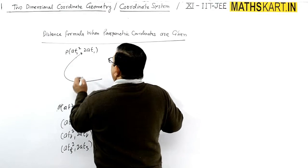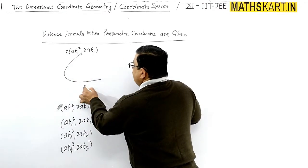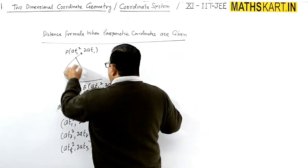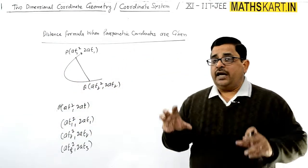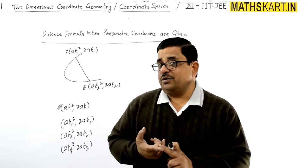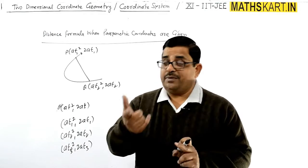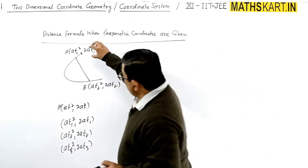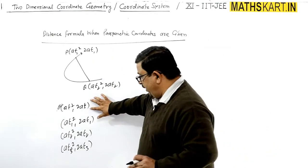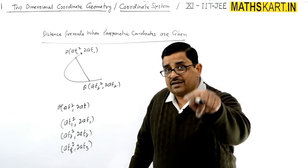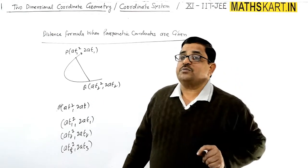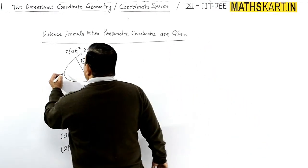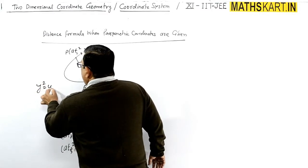At1 square, 2at1, at2 square, 2at2. And these are the parametric coordinates and these are only possible on the parabola. Because these type of coordinates, at square, 2at. This is where particular parabola, and what is this parabola? Y square equals 4ax.